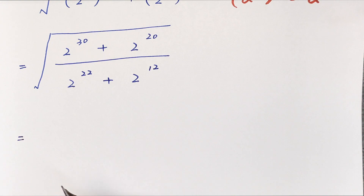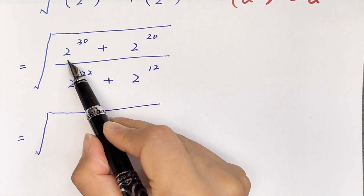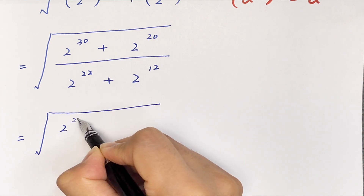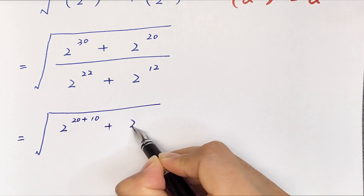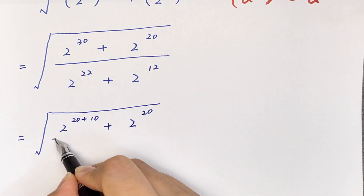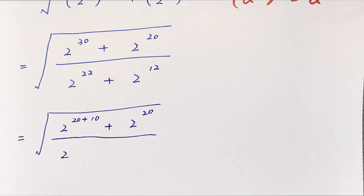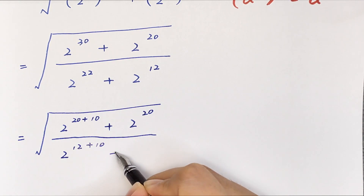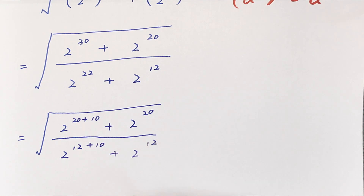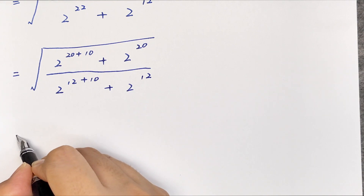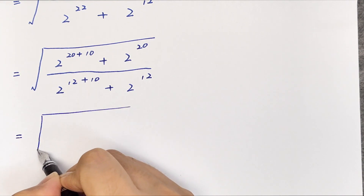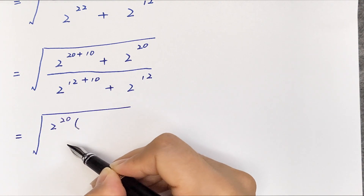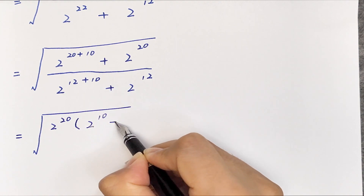It will be equal to the square root of (2 to the power of 30 plus 2 to the power of 20) divided by (2 to the power of 22 plus 2 to the power of 12). We take 2 to the power of 20 out of the numerator bracket: 2 to the power of 20 times (2 to the power of 10 plus 1).